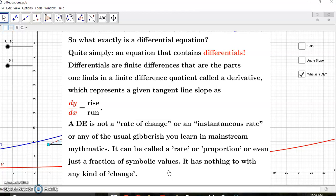I suppose that quite simply, a differential equation is an equation that contains differentials. So what are differentials? There are finite differences that are parts one finds in a finite difference quotient. So the finite differences do not change, right? There's nothing about change there. And they're basically the parts one finds in a finite difference quotient, which we call a derivative.